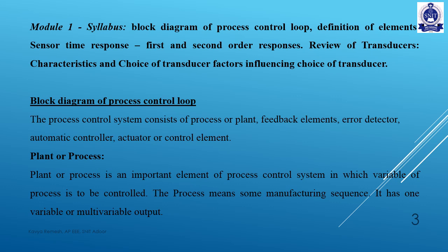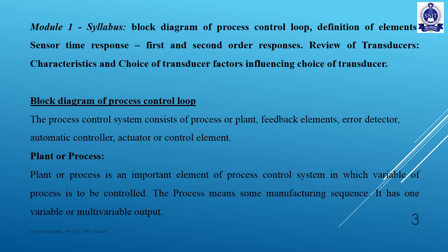The process is a manufacturing sequence. We already have a block diagram for this process control. If you want to add a new output, you can add a new output through the control loop. This is the process control block diagram structure.